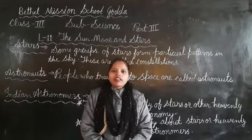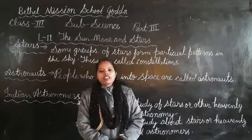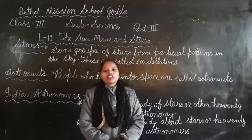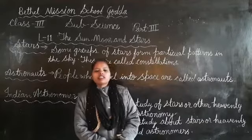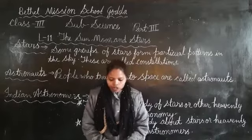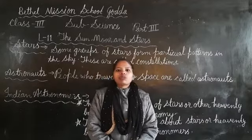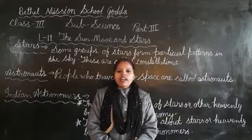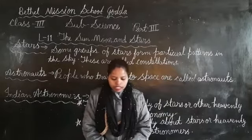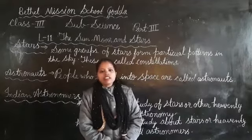Squadron Leader Rakesh Sharma was India's first man in space, and he was the first Indian cosmonaut. Kalpana Chawla was another Indian who visited space. Sunita Williams was also an Indian-origin astronaut who stayed the longest in space.